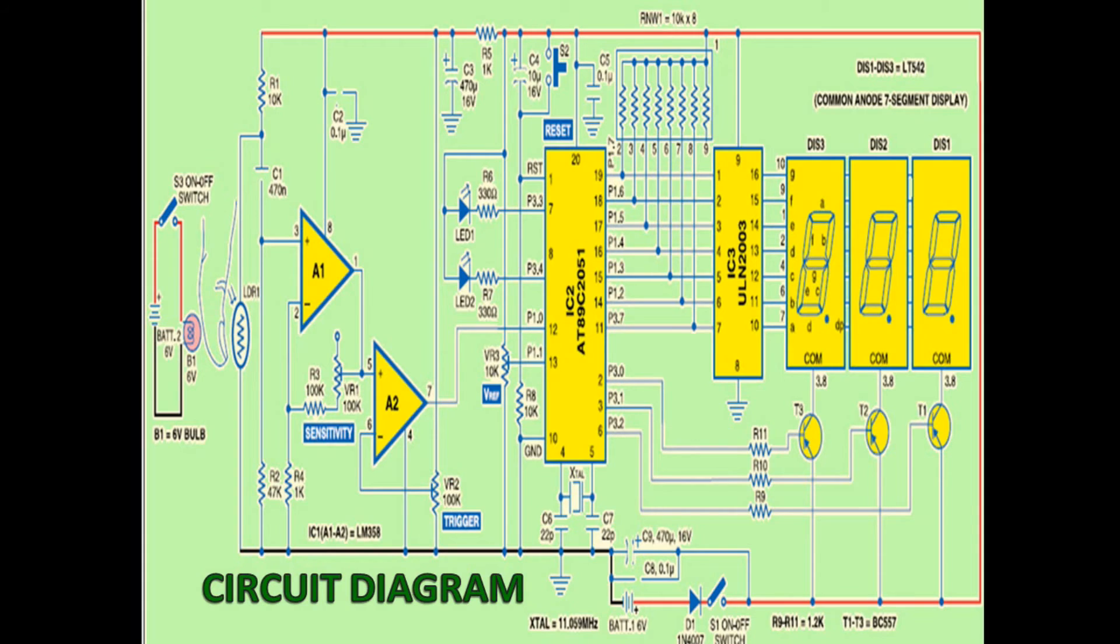In this diagram, at one end, we have the light source and the LDR part, which is connected to the amplifier and filter. That is because the signal received from LDR has to be amplified before processing. This signal is then given to a microcontroller.